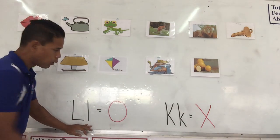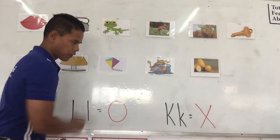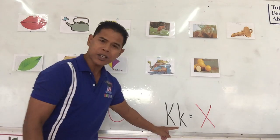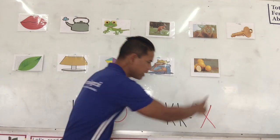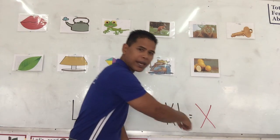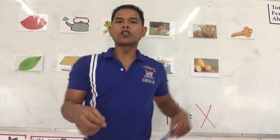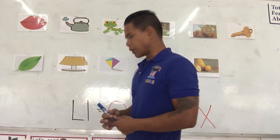Remember, for the letter L we circle the picture. For the letter K we cross it, we put an X on it. So let's go.